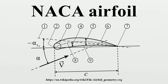It is 15% as thick as it is long. The formula for the shape of a NACA 00XX foil, with XX being replaced by the percentage of thickness to chord, is defined using the following variables: C is the chord length, X is the position along the chord from 0 to C, Y_t is the half thickness at a given value of X, and T is the maximum thickness as a fraction of the chord.